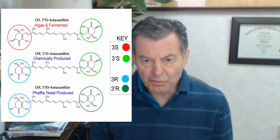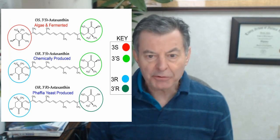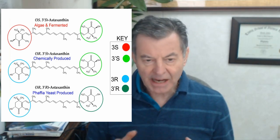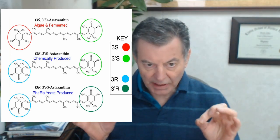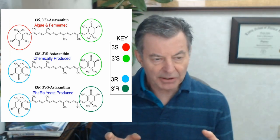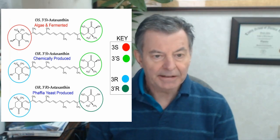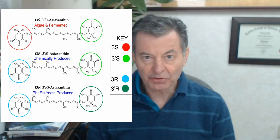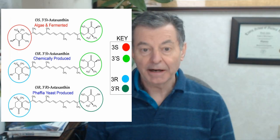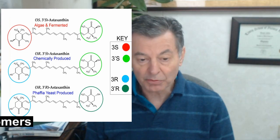What you find in a wild salmon is what we call 3S3S, and that's called free astaxanthin. Free astaxanthin means just the molecule itself. So this is the astaxanthin molecule, and on either end you see the 3S3S, and that means it's natural. What you get from algae-produced astaxanthin is 3S3S — that's a stereoisomer, which is what that stands for.